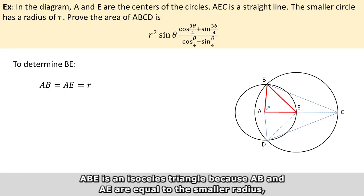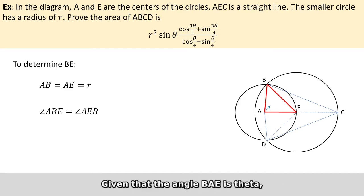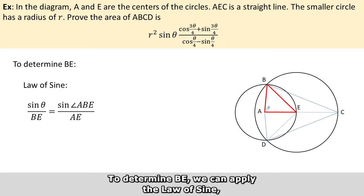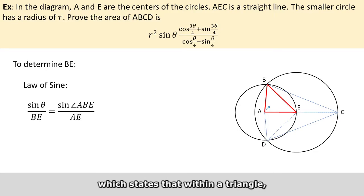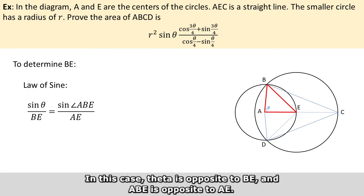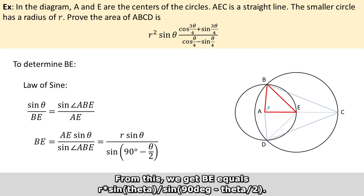ABE is an isosceles triangle because AE and AB are both equal to the smaller radius, which also means that the angles ABE and AEB are equal to each other. Given that the angle BAE is theta, we obtain that angles ABE and AEB are both 90 degrees minus theta over 2. To determine BE, we apply the law of sines, which states that within a triangle, the quotients of the sine of all angles to their respective opposing sides are all identical. So theta is opposite BE and angle ABE is opposite AE. Hence, sine of theta over BE equals sine of ABE over AE. From this, we get BE equals R times sine of theta over sine of (90 degrees minus theta over 2).